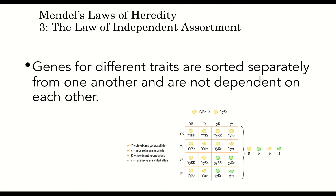Mendel believed that genes for different traits were sorted separately from one another and not dependent on each other. This slide shows what is called a dihybrid cross — a chart showing all possible offspring if two parents who are heterozygotes, whose genotypes contain both dominant and recessive alleles for particular traits, are cross-bred. We see that the color and texture traits are inherited separately, such that wrinkly yellow seeds and smooth yellow seeds are both possible. In truth, it gets quite a bit more complicated, and many genes are in fact influenced by and dependent upon each other. Such genes are called linked, and we will talk about those later in the lecture.